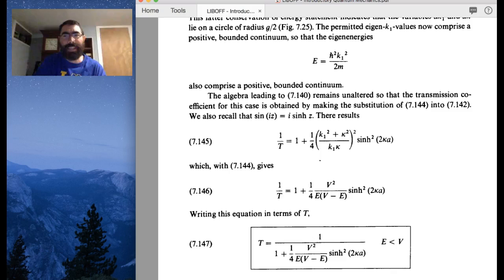So the I out front takes care of the I you would get from the k2 in the denominator, so that becomes kappa, and we eliminate the I with the I out in front, and we change the sine to the hyperbolic sine.